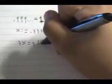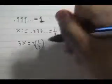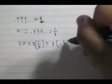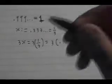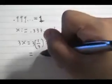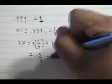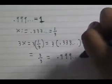Our next step is to multiply x by 3. We get 3x equals 3 times 1 third equals 3 times 0.3 repeating, which simplifies to 3x equals 3 over 3, which equals 0.9 repeating.